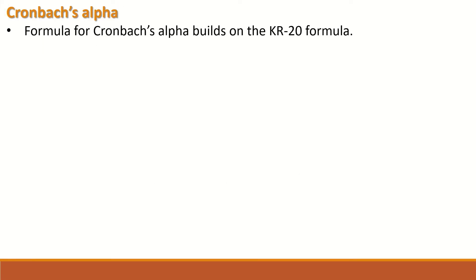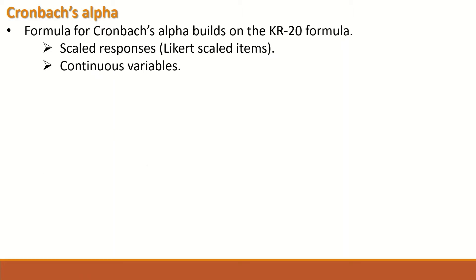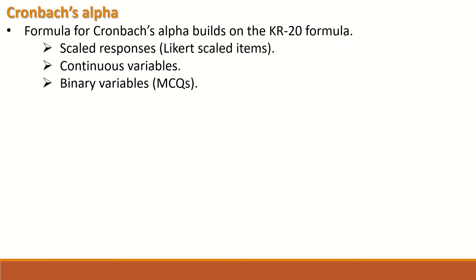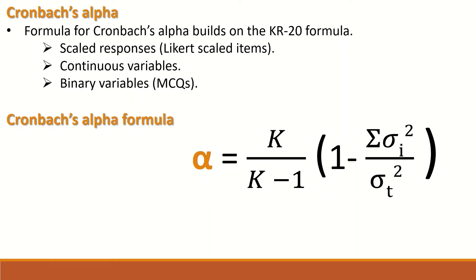Cronbach's alpha formula was established based on the KR20 formula. It can be used to analyze scaled responses such as Likert scale items, continuous variables, and binary variables such as multiple-choice questions. The formula is: alpha equals K divided by K minus 1, multiplied by 1 minus the summation of the variances for each individual item divided by the variance for the total score.